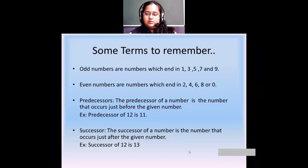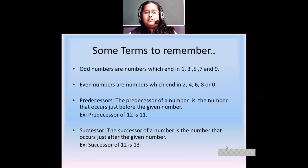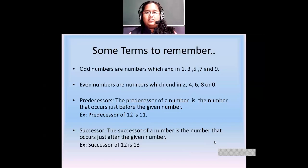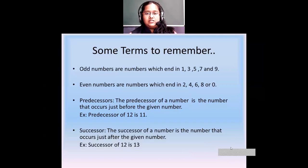Then we saw what are predecessors. Predecessors of numbers are the numbers that occur just before the given number. For example, if the given number is 16, then its predecessor will be 15 because it occurs just before 16. The successor of 16 is the number which comes after — so after 16 we have 17, making 17 the successor of 16.